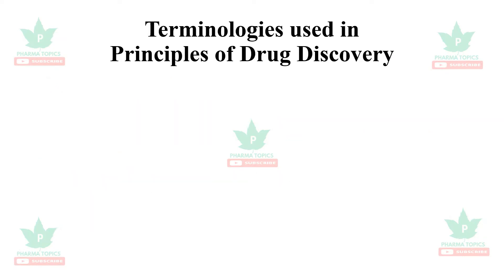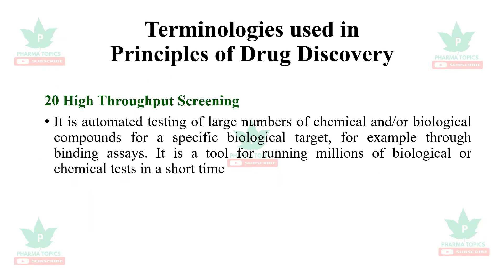Next is high-throughput screening. It is the automated testing of large numbers of chemical or biological compounds for a specific biological target — for example, through drug binding assays. It is a tool for running millions of biological or chemical tests in a short span of time.